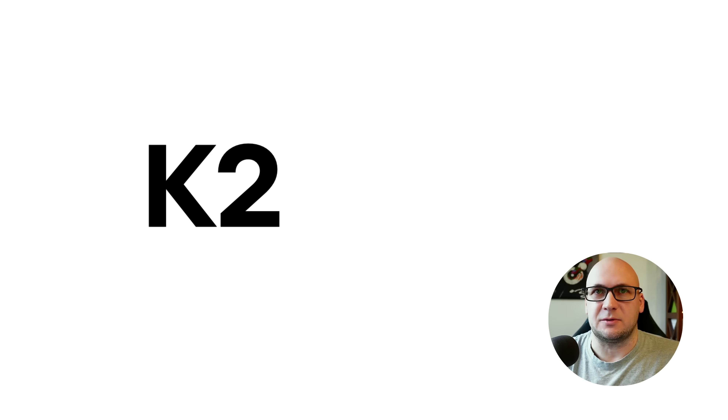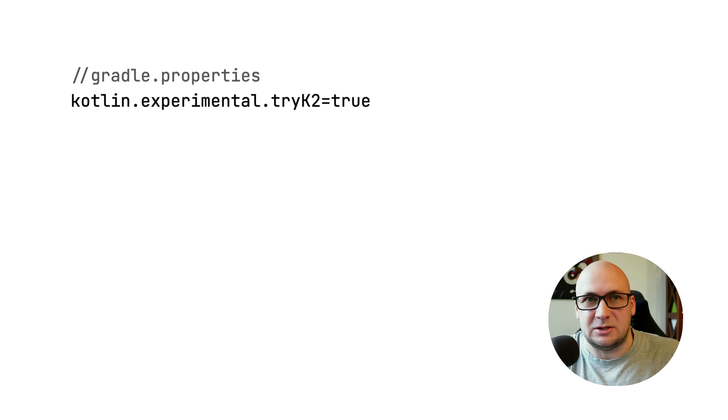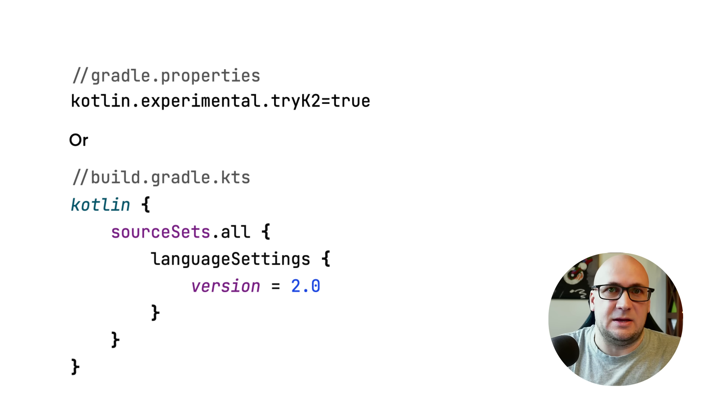Before we go into the central theme of this release, let's take a look at the news about the K2 compiler. The work on K2 continues. In Kotlin 1.9 we announced basic support for Kotlin native, making it available for multi-platform projects. Starting with 1.9.20, the K2 compiler for all targets is now in beta. You can enable it by adding the Kotlin experimental try K2 property into the Gradle properties file, or by setting the language version to 2.0 in your build.gradle.kts file.